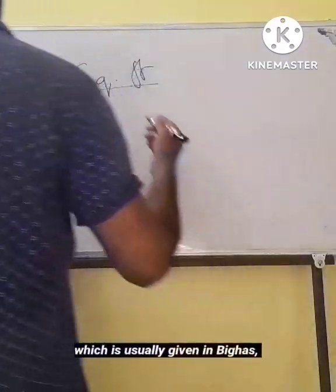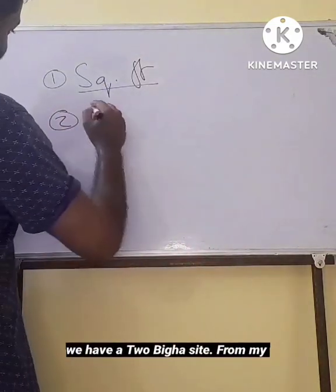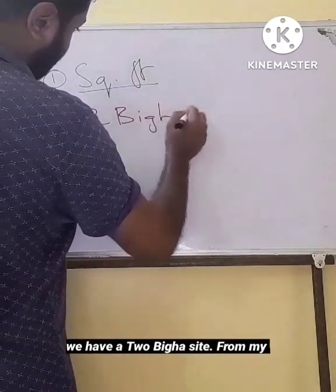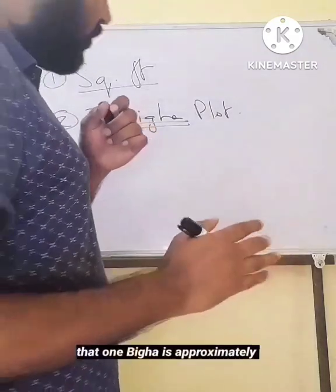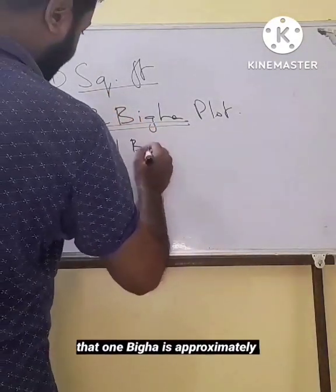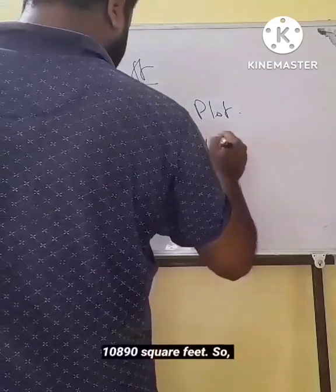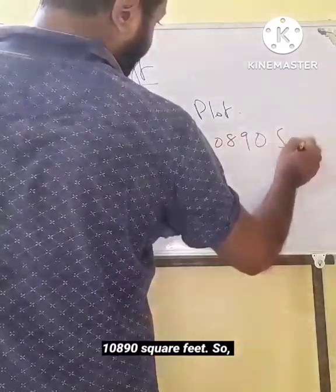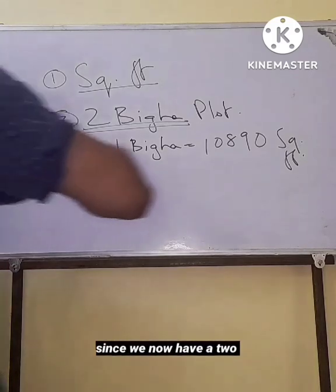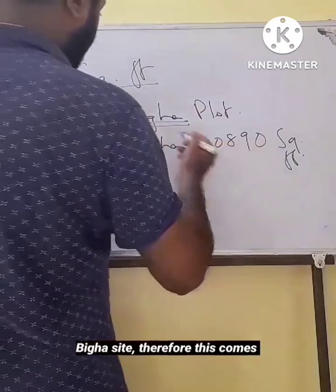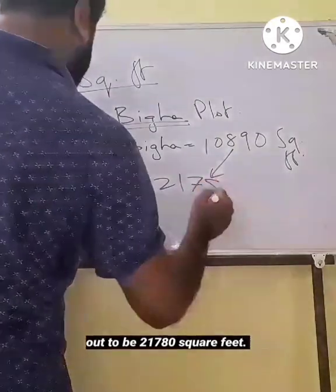Second, let us take the plot size which is usually given in Bighas, Kathas, Lessa etc. Suppose we have a two Bigha site. From my earlier post you already know that one Bigha is approximately equal to 10,890 square feet. So since we now have a two Bigha site, this comes out to be 21,780 square feet.